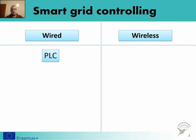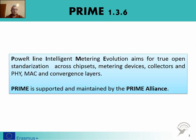On the basis of the PLC standard, the PRIME Alliance created the PRIME standard. The PRIME version 1.3.6 standard stands for Power Line Intelligent Metering Evolution, and it aims for true open standardization across device chipsets, metering devices, collectors, and layers. The PRIME standard is supported and maintained by the PRIME Alliance.